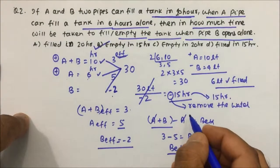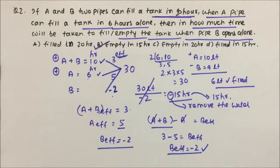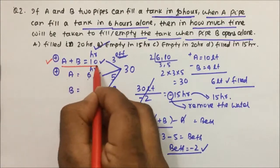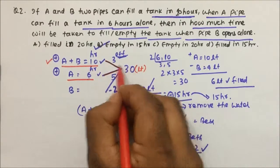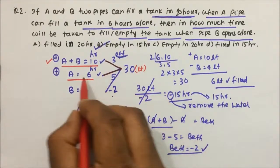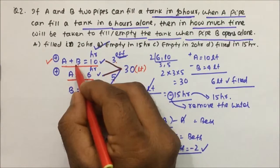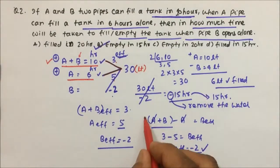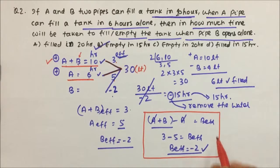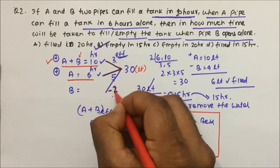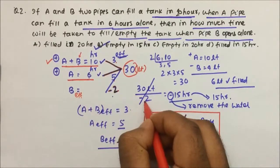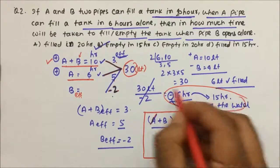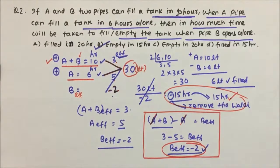So to summarize what we did: we took A plus B total time as 10 hours and A's time as 6 hours, then found the LCM as 30 — which became our tank capacity. Then 30 by 10 equals 3 and 30 by 6 equals 5. A's efficiency is 5 but A plus B efficiency is only 3, so B must be doing negative work. Using A plus B efficiency minus A efficiency we got B efficiency as minus 2 — meaning B removes 2 liters per hour. So 30 divided by 2 equals 15 hours — B empties the full tank in 15 hours. Thanks for watching the video.